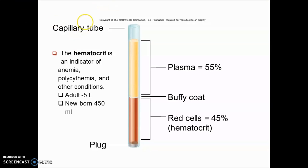This can be a good image-based question. The term hematocrit — when we centrifuge blood, the red cells settle at the bottom and plasma is at the top. The highest constituent of blood is plasma at around 55%, followed by red cells. Hematocrit refers to red cells only and is used as an indicator for anemia and polycythemia. An adult contains around 4.5 to 5 liters of blood, and a newborn contains around 450 ml.